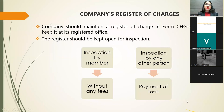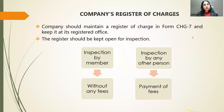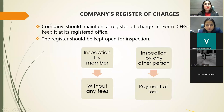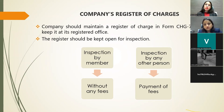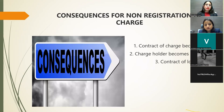Just as the registrar must maintain a register of charges, a company is also required to maintain its own register of charges in the prescribed Form CHG-7. This register must be kept open for inspection. Members of the company may inspect it without paying any additional fees, but any other person wishing to inspect the charge register must pay a fee.